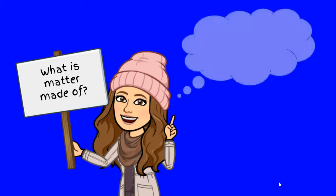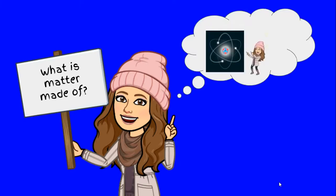What is matter made of? An atom is the basic unit from which all matter is made. Different substances are made of different types of atoms, but all atoms have the same basic structure.